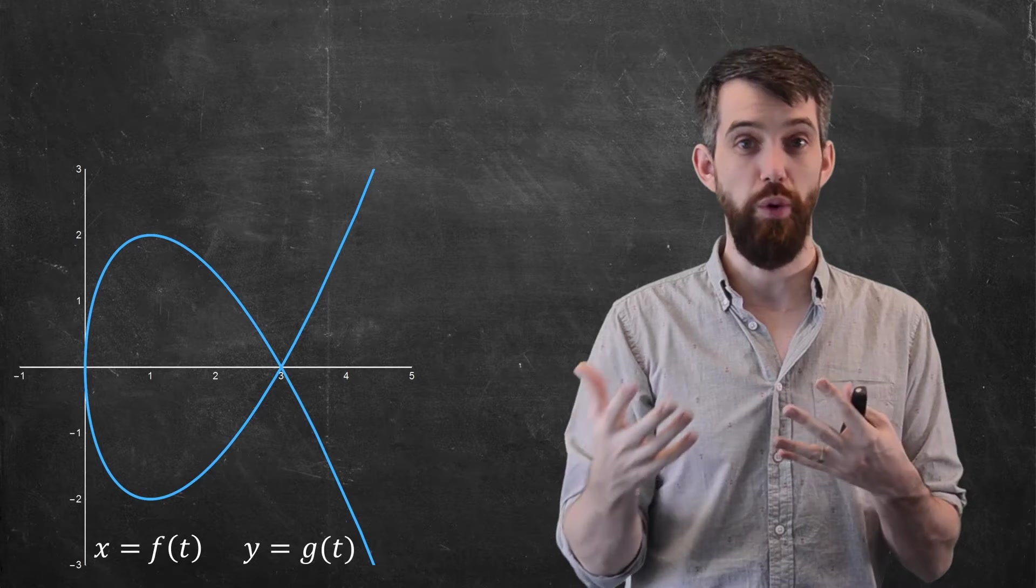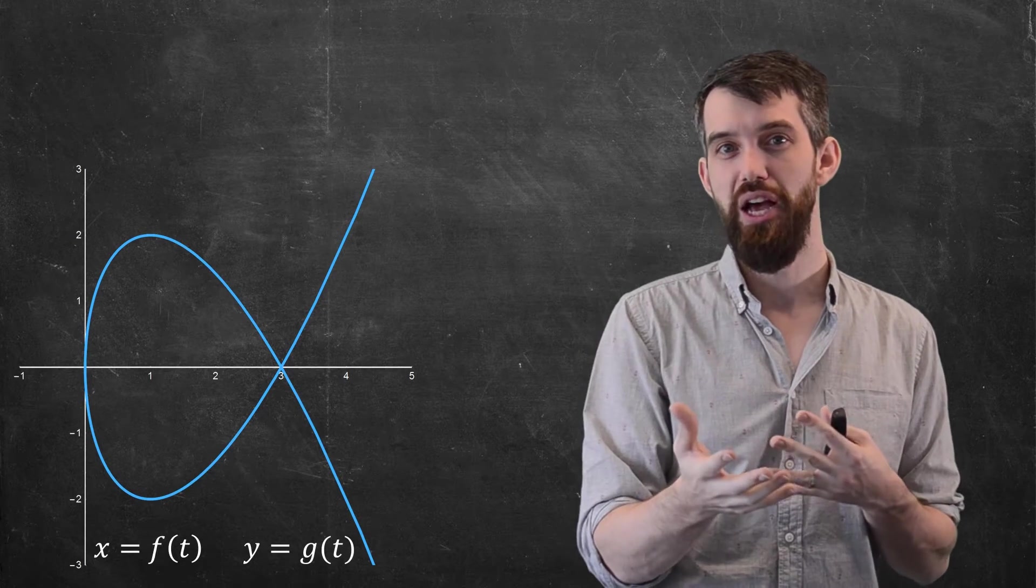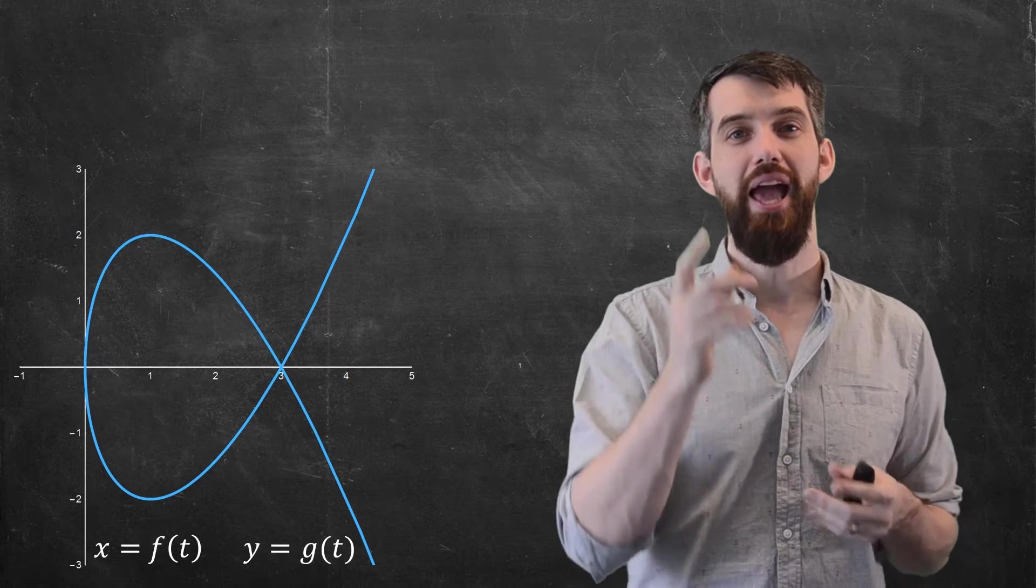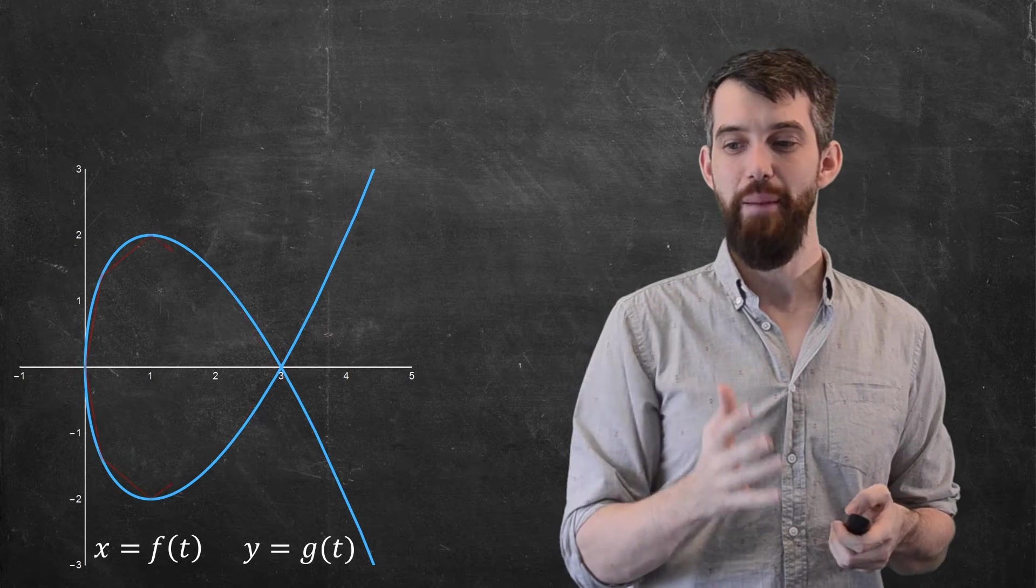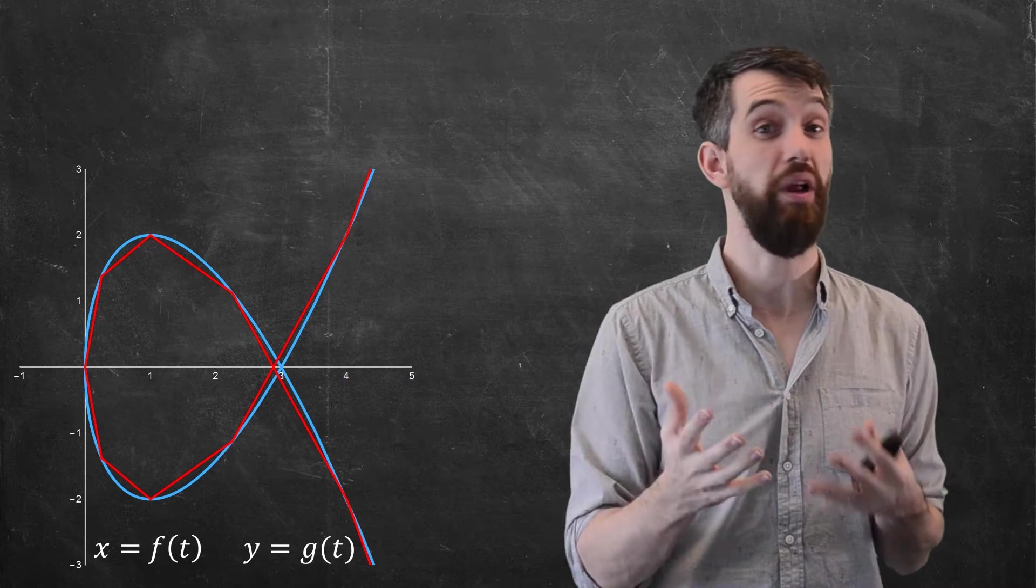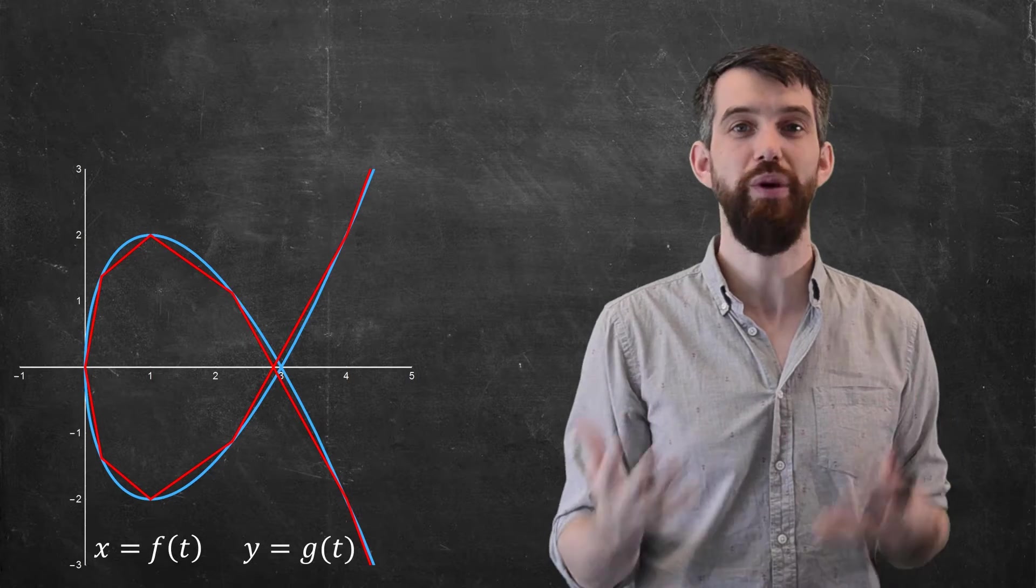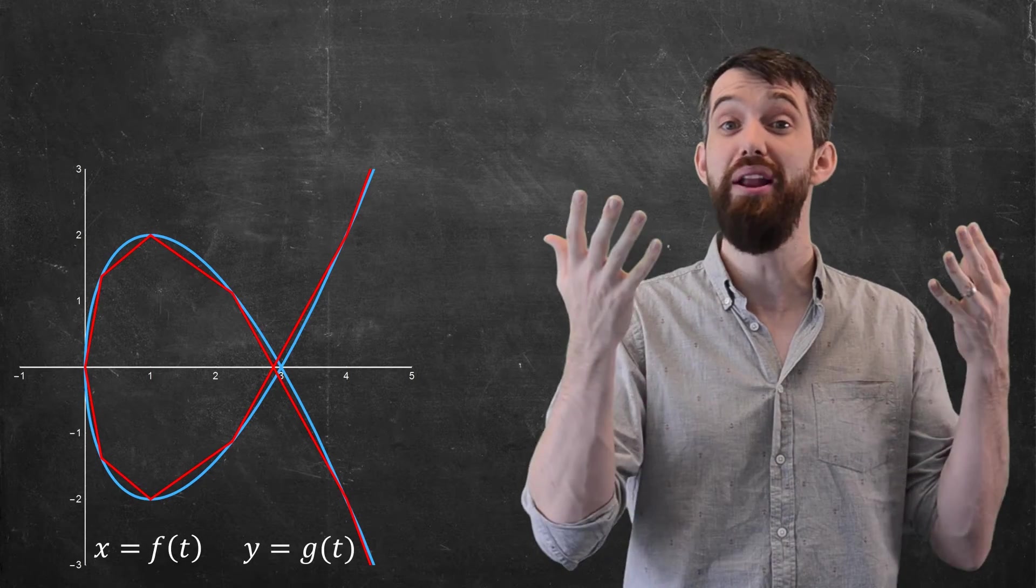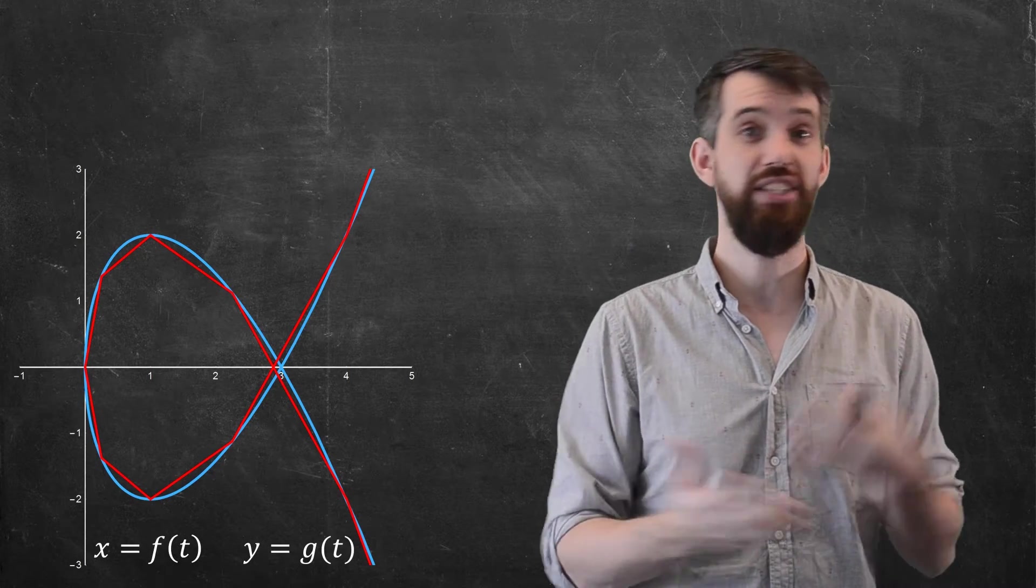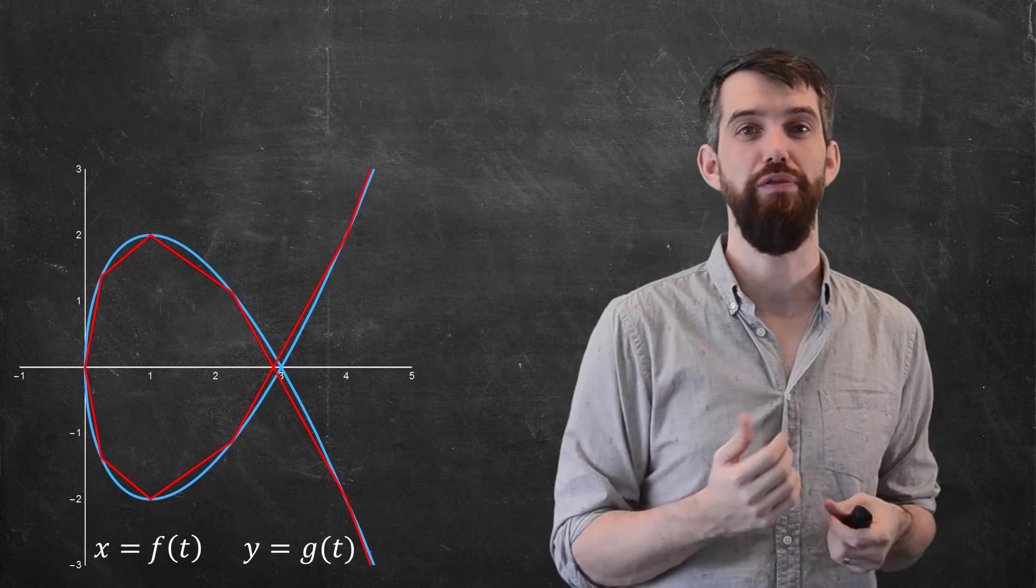Now, the technique we used when we did arc length in the past was to replace this nice smooth curve by a polygonal path, a path that's just made up of a bunch of straight lines. The basic reason for this is that straight lines are things I know how to compute the length of, and I can sum up all the straight lines and maybe take some sort of limit.